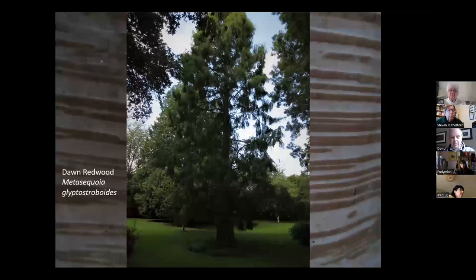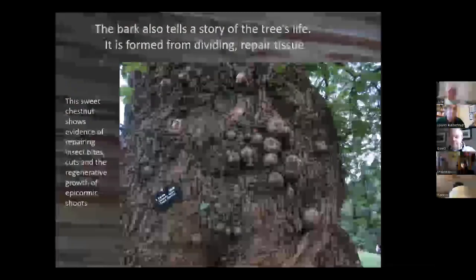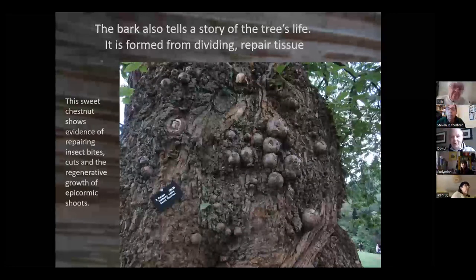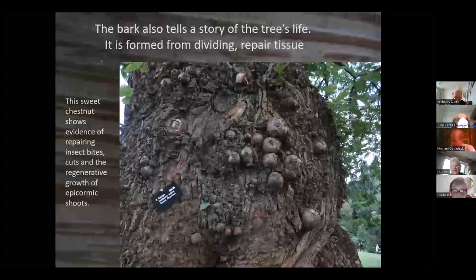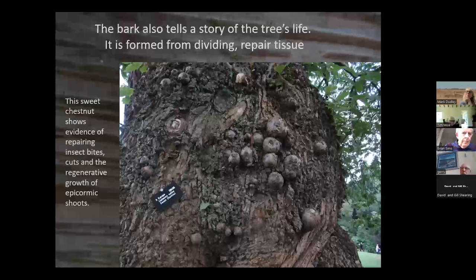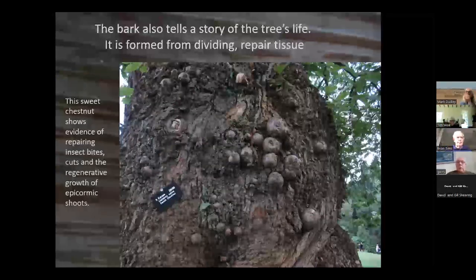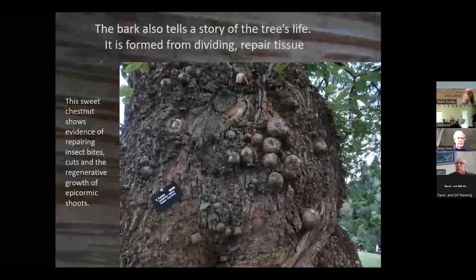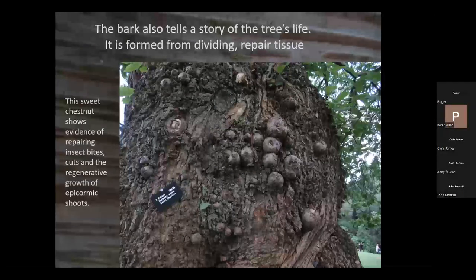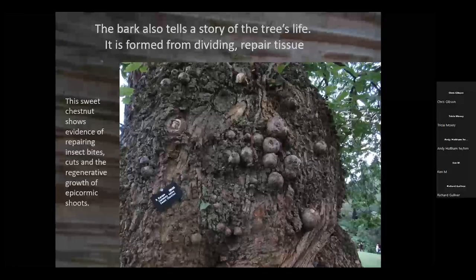Here is the Metasequoia dawn redwood showing the typical coniferous shape. Looking at the bark, you can see the story of the tree — who's visited and what's happened. This is a sweet chestnut showing scars and knobbles as evidence of the trunk repairing insect bites when younger, callusing around wounds that have filled in, and epicormic shoots leaving scars behind. It's fascinating to look at the trunk of a tree and wonder at what may have happened in the last two or three hundred years.